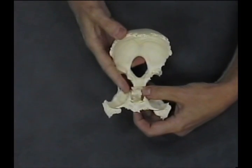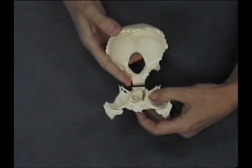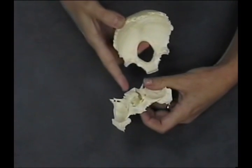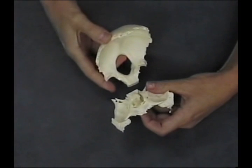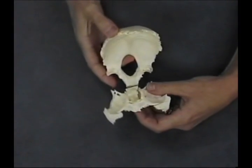Looking at the base of the sphenoid here, if I'm going to rotate the sphenoid this way, the base goes to the right, and then the occiput also rotates in the same direction, like this.